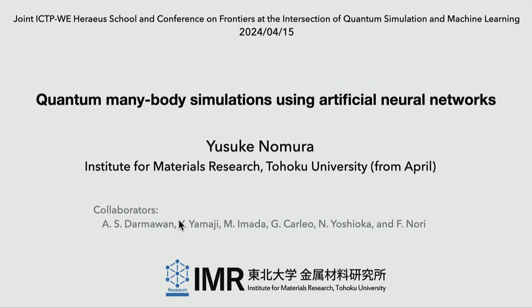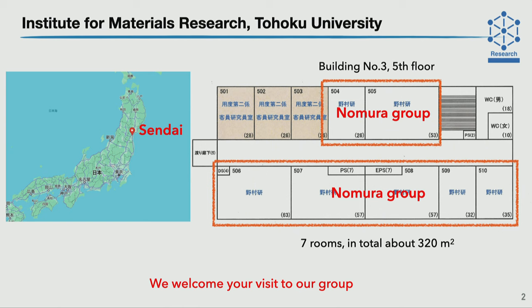Collaborators are listed here. Actually, from April I moved from Keio University to Tohoku University. Our university is located in Sendai, and we have good food and good sake. Our group has become big — we now have seven rooms and in total more than 300 square meters. But currently the member is only me, one member for 300 square meters. So I would like to welcome you to visit our group because we have more than enough space.